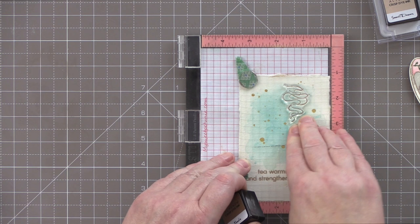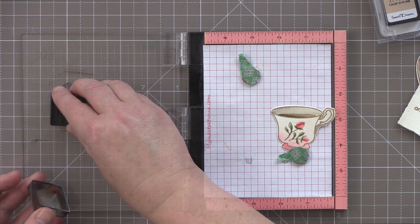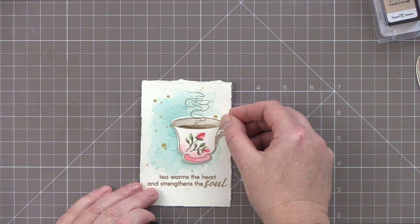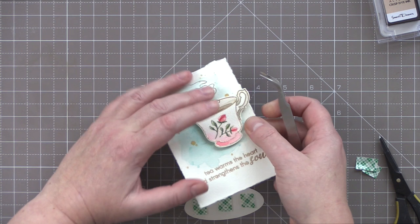I'm going to use some mocha ink from Altenew and I'm going to stamp that a couple of times on the background and then line it up over the teacup and stamp it again on the teacup. Because I planned where I wanted the steam in the teacup to be it means that once I've done that I can then line them up and the teacup and steam will be in the right place.